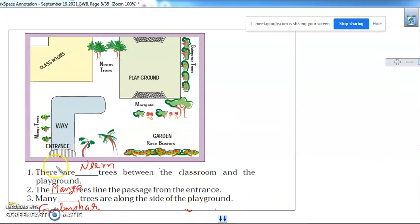Once again, I am revising this. There are neem trees between the classroom and the playground. Then the mango trees line the passage from the entrance. And gulmohar trees are along the side of the playground.